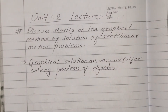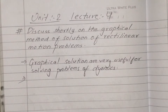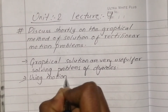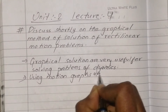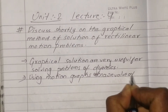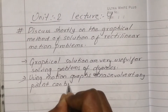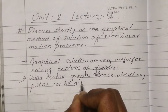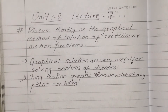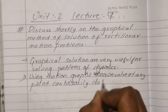Consider the motion graph. Using motion graphs, we can check and determine unknown values. At any point, unknown values can be easily determined using this method. We can deal with motion graphs this way, and this will be easily determined.